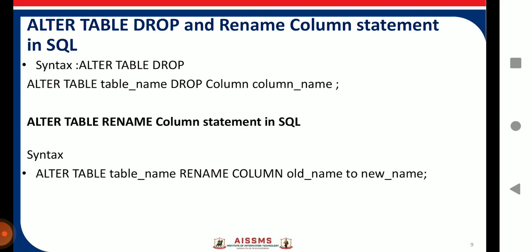The next statements are DROP and RENAME. When executing the DROP statement, be very careful — once you execute it, the operation cannot be recovered or rolled back. The syntax for dropping a column is: ALTER TABLE table_name DROP COLUMN column_name. In this way you can drop columns from an existing table.